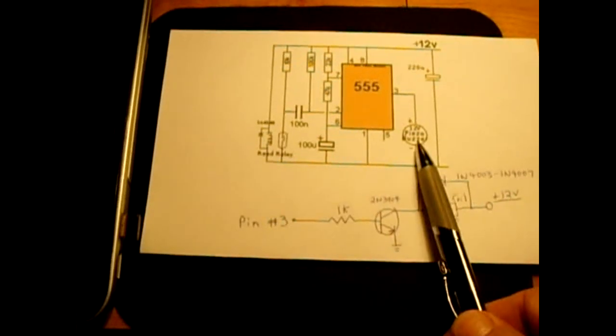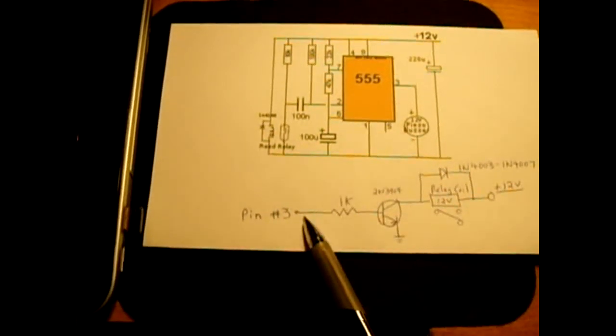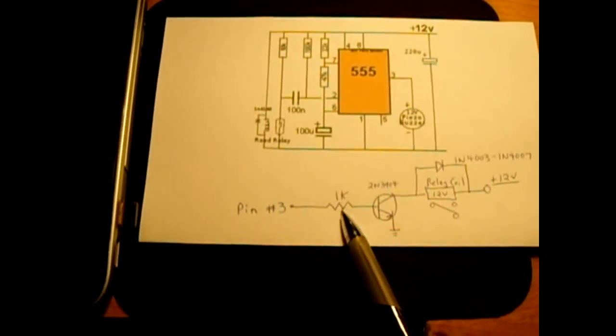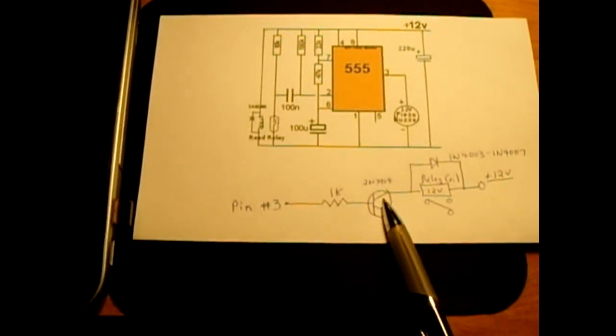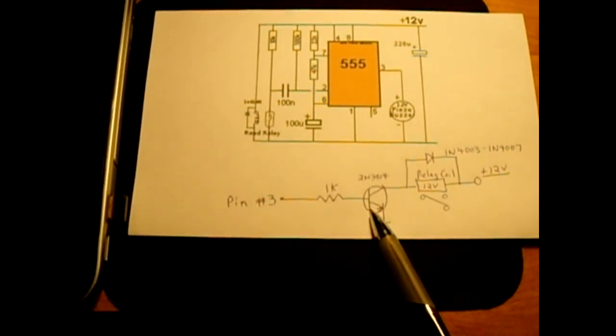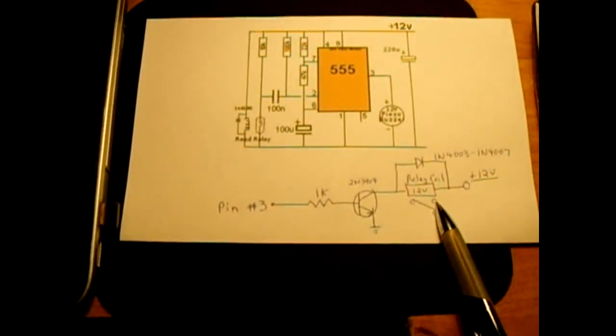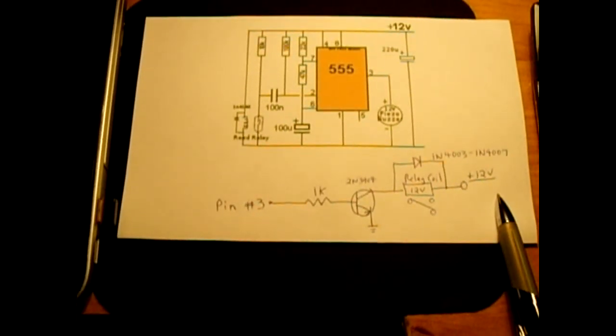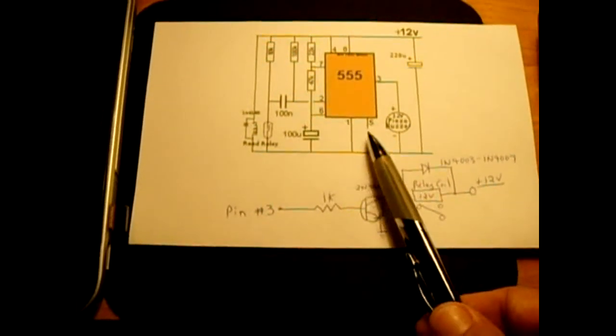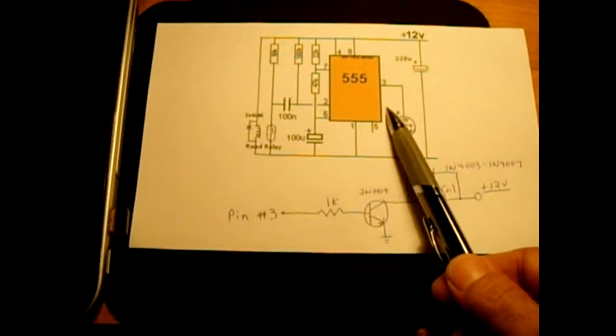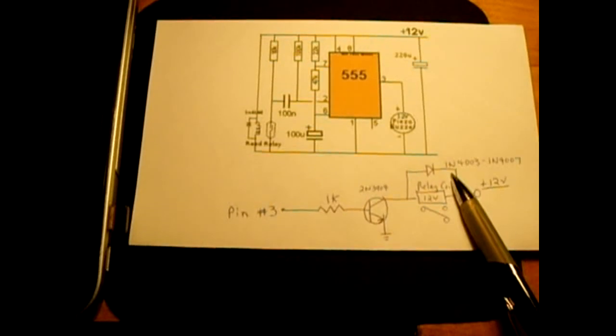You could also, instead of using the piezo buzzer, use pin 3 feeding it to a 1k into a 2N3904 NPN transistor which will power a relay coil, and you could use the contacts to power interior lights of your car. Now once the duration passes, the circuit will click off even though you still have 12 volts being applied to the circuit.